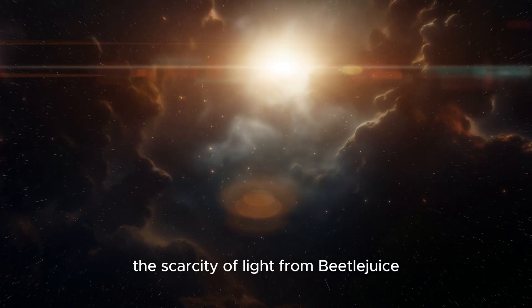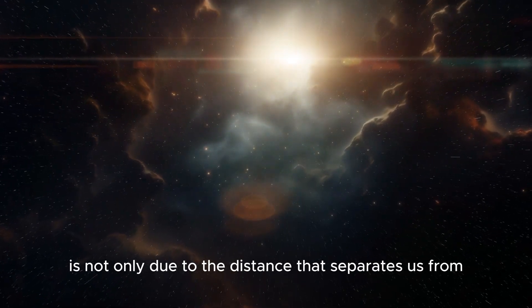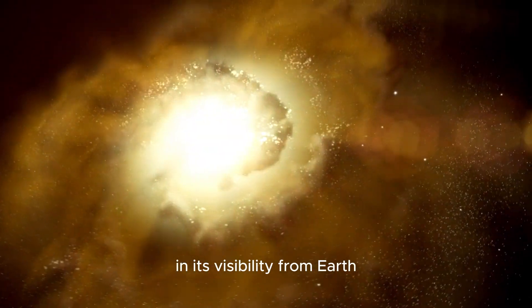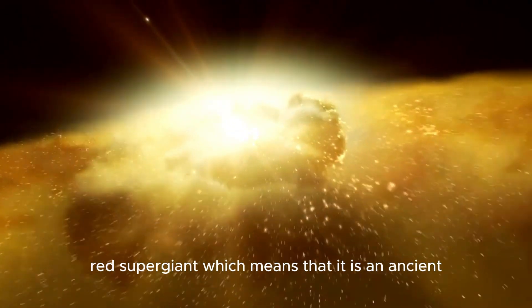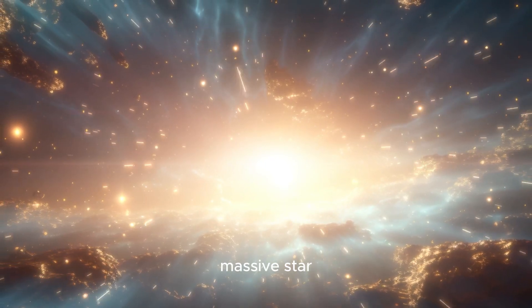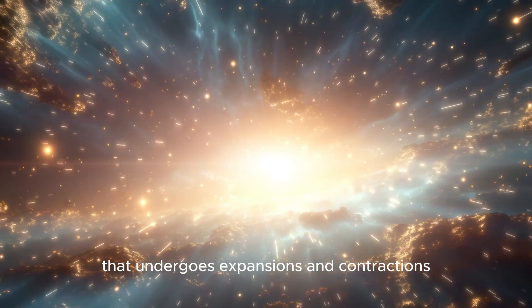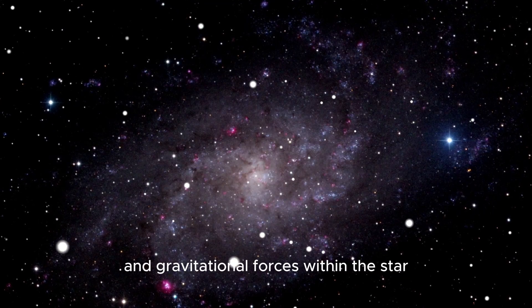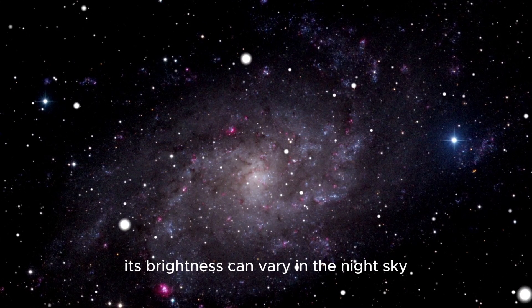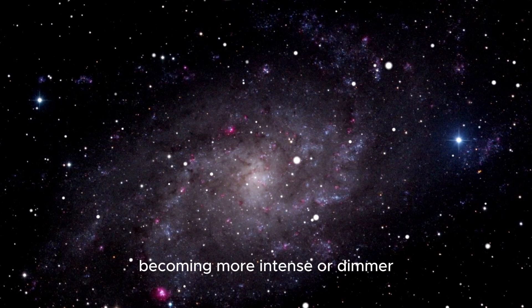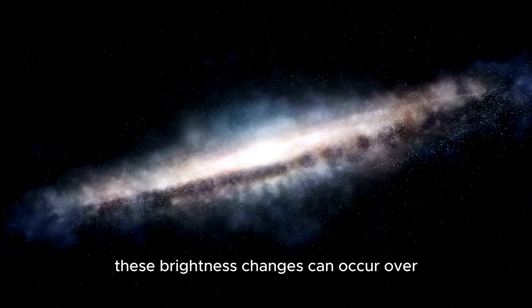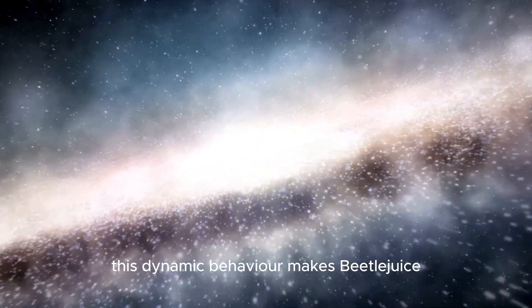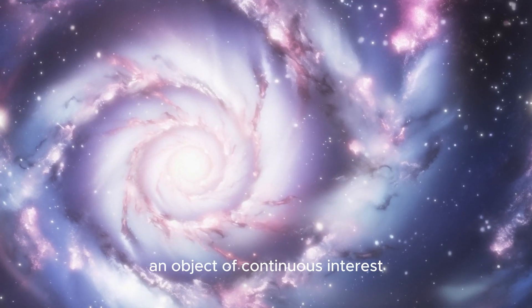However, the scarcity of light from Betelgeuse is not only due to the distance that separates us from it. Betelgeuse is what is known as a pulsating red supergiant, which means that it is an ancient, massive star that undergoes expansions and contractions. These pulsations are driven by the complex interplay of nuclear fusion and gravitational forces within the star. During these cycles, its brightness can vary in the night sky, becoming more intense or dimmer. These brightness changes can occur over extended periods, ranging from 10 to hundreds of days.